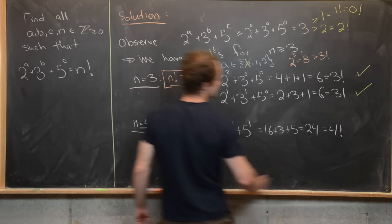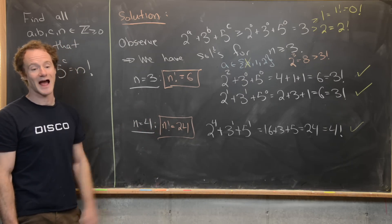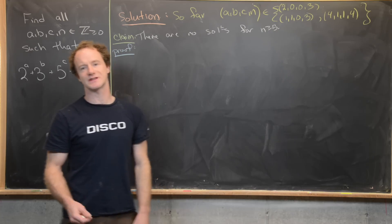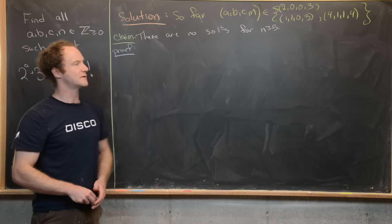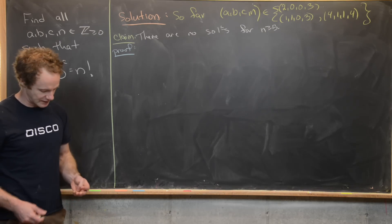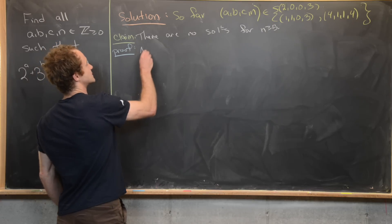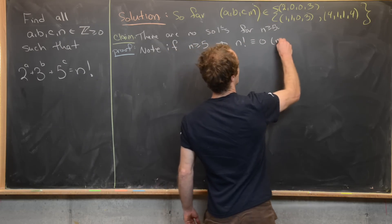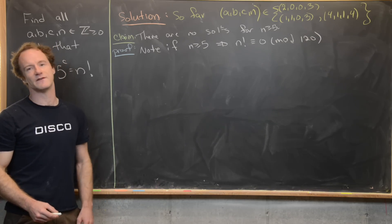We've got three solutions total — two where we get 3 factorial and one where we get 4 factorial — given by the quadruples (a, b, c, n) = (2, 0, 0, 3), (1, 1, 0, 3), and (4, 1, 1, 4). Now we want to prove there are no solutions for n ≥ 5, and we'll do this by working modulo 5 factorial, in other words modulo 120. If n ≥ 5, then n factorial is congruent to 0 mod 120, since 6 factorial is a multiple of 5 factorial and so on.